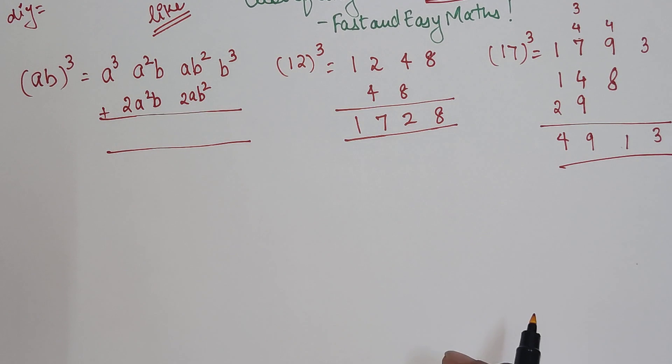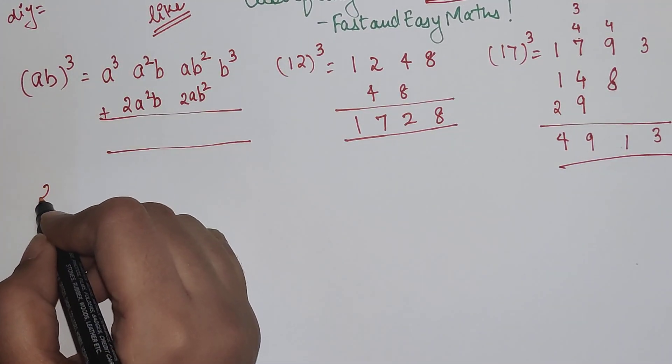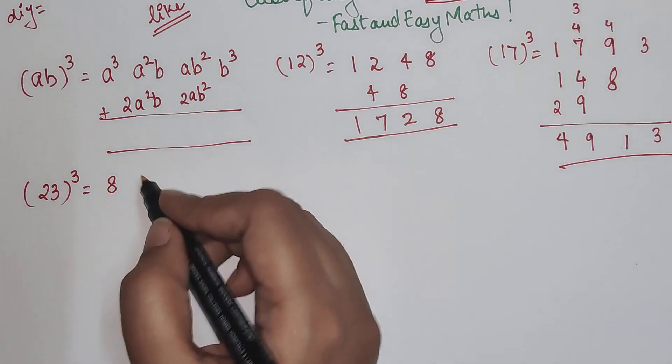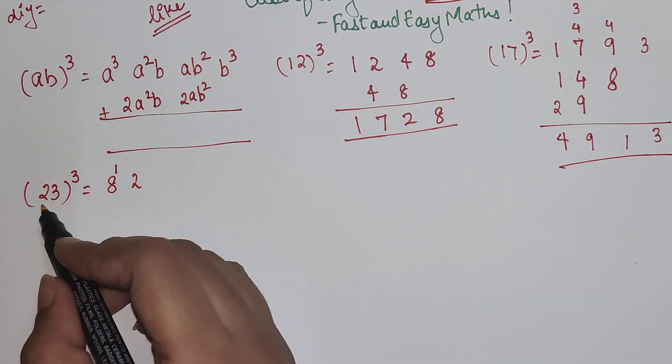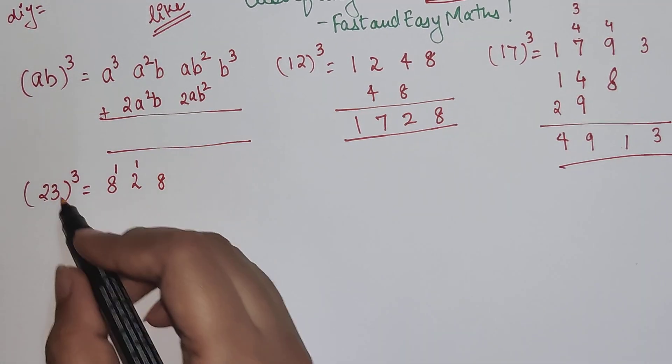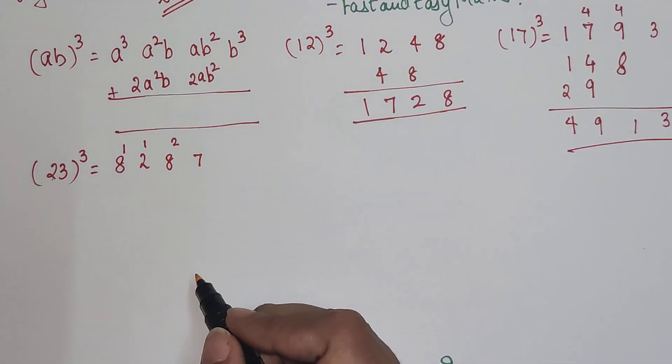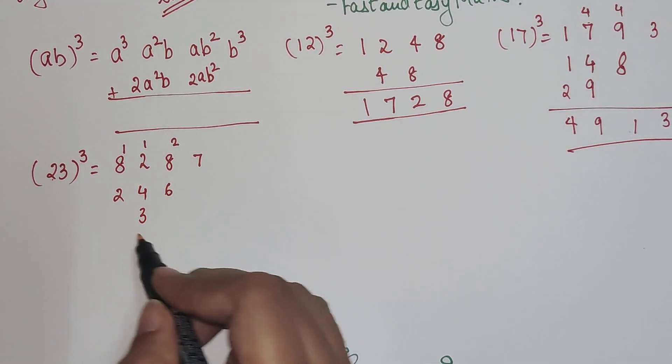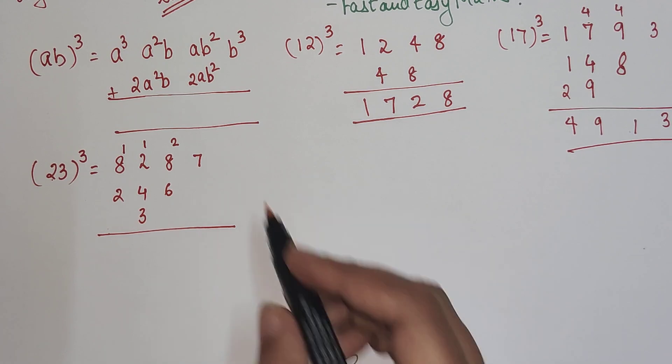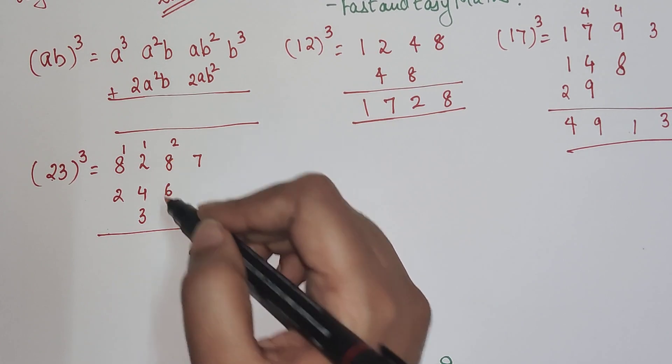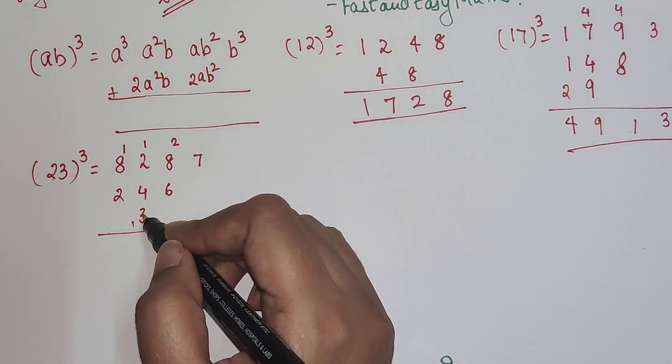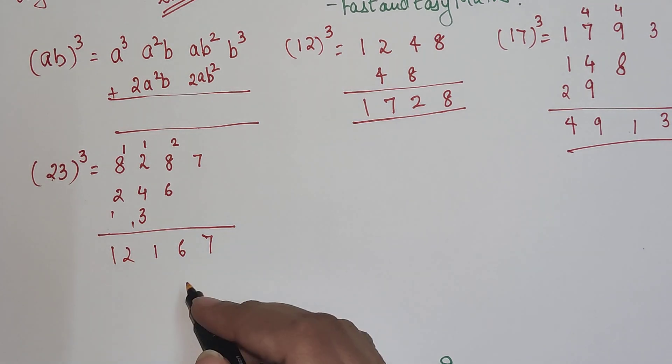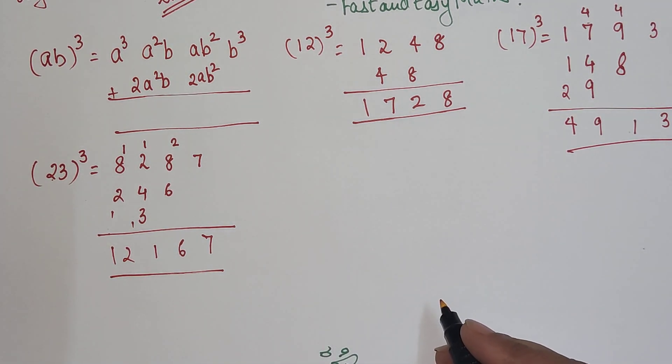So now let's look at even bigger number - we will do 23³. 2³ is 8, then 2² × 3 that is 4 × 3 which gets you 12. Then 2 × 3² so that is 18, and then 3³ that is 27. Then we'll do double of 12 that is 24, double of 18 that is 36. So your final answer is 7, then 8 plus 8 is 16, 1 carry, so 7, 10, 11, 1 carry, so we have 12,167 - that is your answer for 23³.